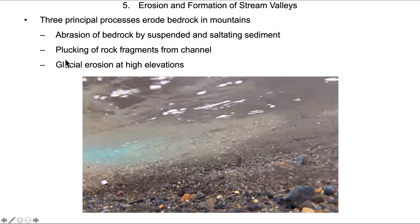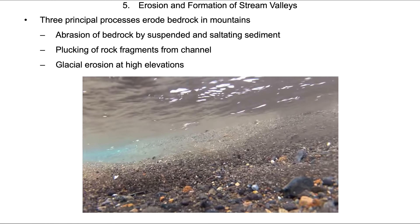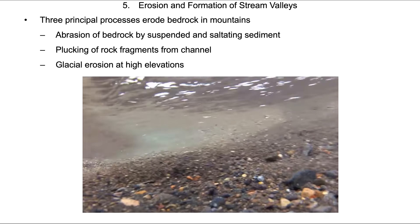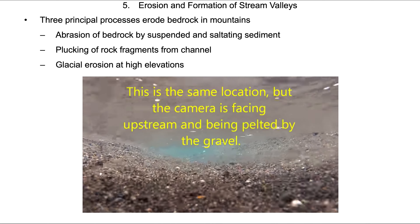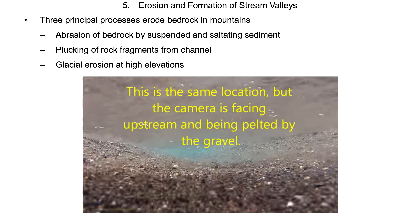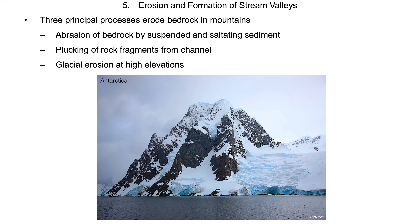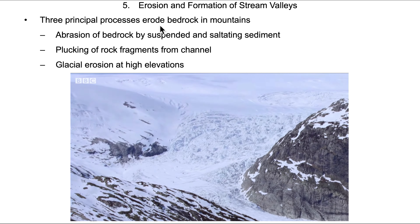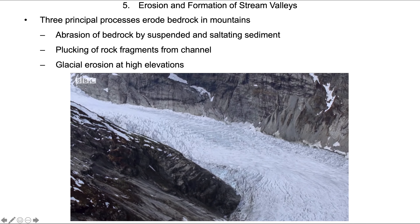Erosion can also occur by the plucking of rock fragments from the channel. These rocks can be small, plucked up by the current itself, or quite large — the size of a car or even a house if picked up by ice. This brings us to glacial erosion at high elevations — either high elevation at low latitude or low elevation at high latitude. Either way it's cold year-round, and these glaciers grind rocks against one another like sandpaper and bang rocks against one another like a jackhammer.